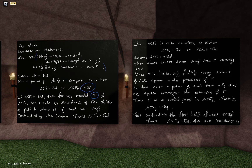Just to point out one more thing: I made a big deal about it being crucial that F was a polynomial. That's just so that I can write down F as a first-order expression. If I take an arbitrary function F, I just can't do that.